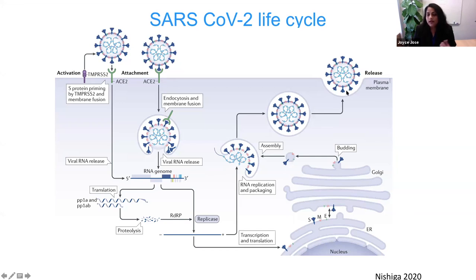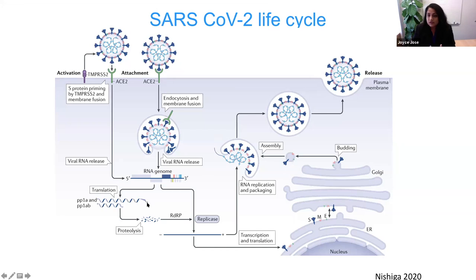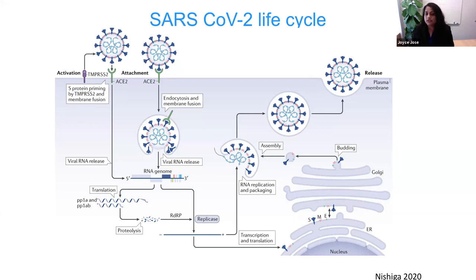What I want you to focus on is the protease cleavage step. I'm interested in protease inhibitors as antivirals — can we inhibit the protease activity at this processing step to stop the virus from replicating? Antibodies and vaccines prevent virus entry, but here we want to target the virus after it has entered and started translation, specifically inhibiting viral proteases to stop polyprotein processing.